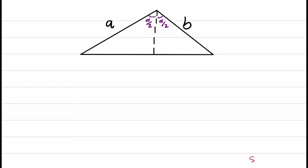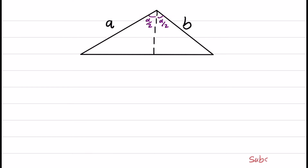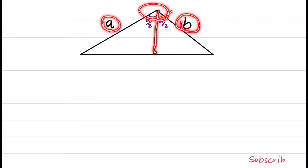Welcome to Masked Arctic. In this question, a triangle with sides A, B, and angle alpha is given. The question asks to find the length of the angle bisector in terms of A, B, and alpha.